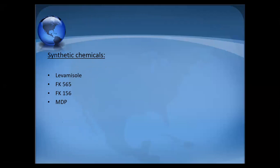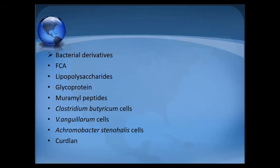Bacterial derivatives include Freund's Complete Adjuvant (FCA), lipopolysaccharides, glycoproteins, muramyl peptides, Clostridium butyricum cells, Vibrio anguillarum cells, and Achromobacter stenohaelis. Fungal derivatives include glucans such as beta-1,3-glucan. Polysaccharide molecules include chitin, chitosan, lentinan, oligosaccharides, baker's yeast glucan, and fungal glucans.